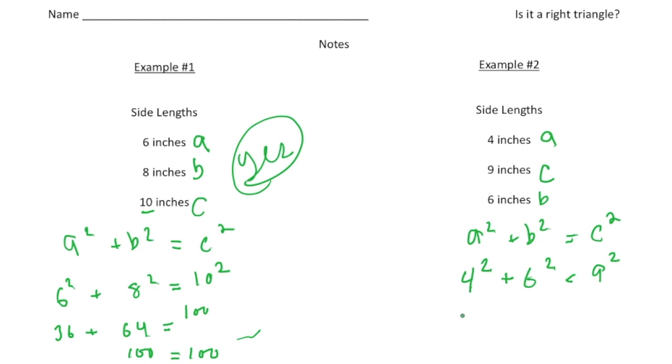So 4 squared is 16 plus 6 squared is 36 equals 81. And 16 plus 36 I know is 52. And 52 does not equal 81. So what that means is that these are not the dimensions of a right triangle. So this is a big no.